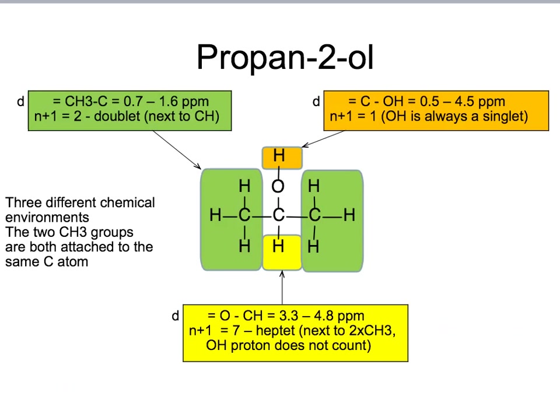Looking at propane 2-ol, we should only have three peaks this time, as both the CH3s are identical. Both are attached to the same carbon. Their peak should be in the range 0.7 to 1.6, as they are both just CH3 attached to a carbon. And they are shown in green on this diagram. It should be a doublet, and that's because there is, on the carbon next door, only one proton. And n plus 1 equals 2. CH proton itself, however, which is shown in yellow here, is next to six different protons. So it would be a multiplet with seven peaks, using the n plus 1 rule. We call this a heptet. Lastly, the OH proton, here shown in orange, would be a singlet, as all OH protons are, and it should be in the range 0.5 to 4.5 parts per million.